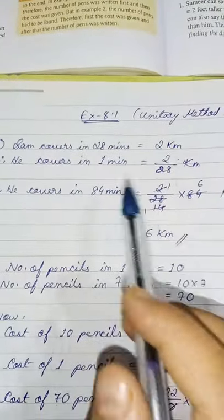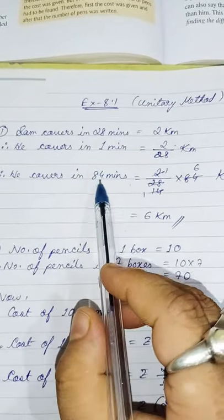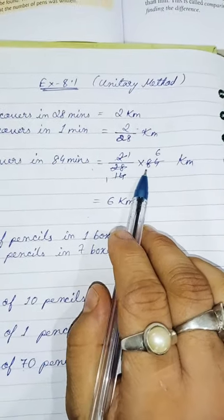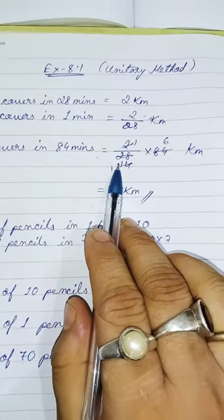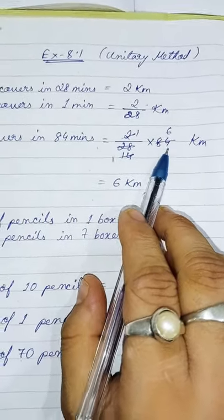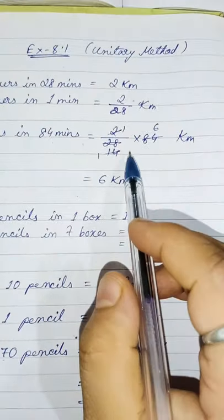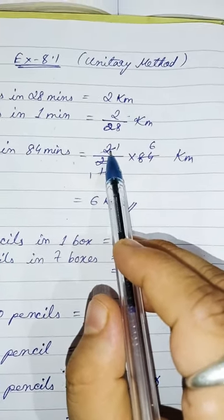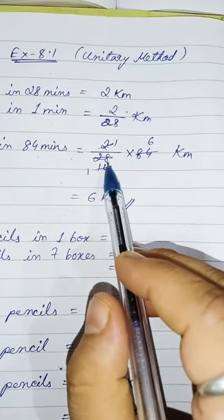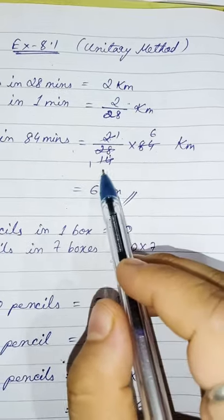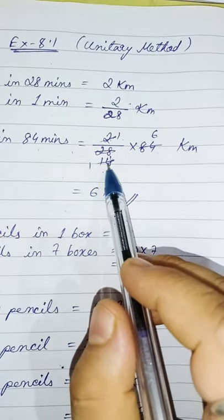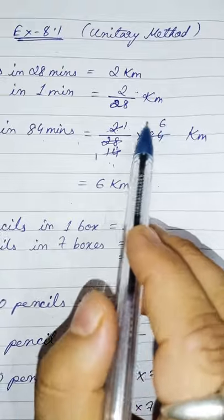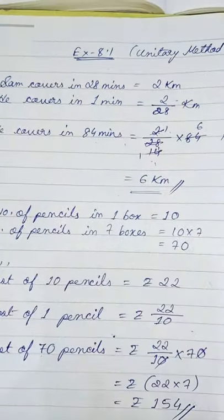As I said, you have to first find out the value for 1. So Sam covers in 1 minute — obviously it will be less — so 2 divided by 28. Next, the question says you have to find it for 84 minutes. Because it has increased again from 1, when it increases it gets multiplied, so multiply by 84. You can go for cancellation: both numbers are divisible by 2, giving 1 and 14; then 14 divides into 84 giving 6. So 6 into 1 equals 6 kilometres — in 84 minutes he will cover 6 kilometres.